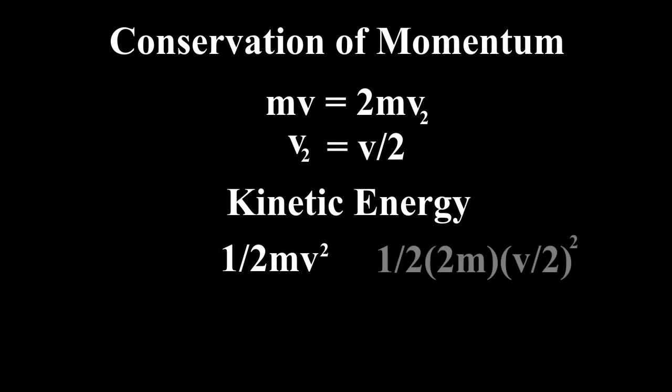Kinetic energy out is one half 2m times v over 2 squared. Remember we have double the mass, that's 2m, and the velocity is now v over 2, as determined by the momentum calculation. Note that in this formula, velocity is squared, introducing an exponential component to the calculation.